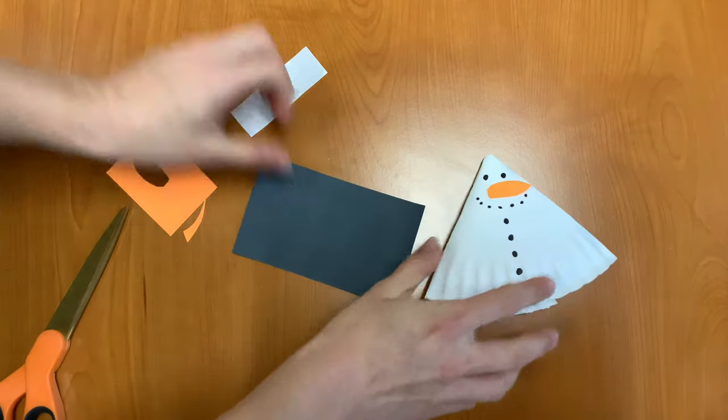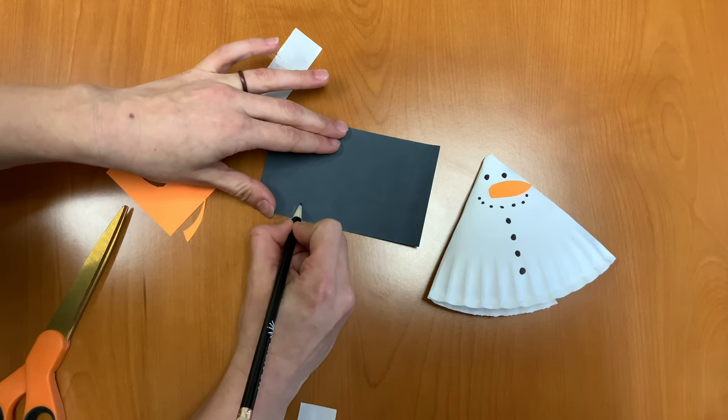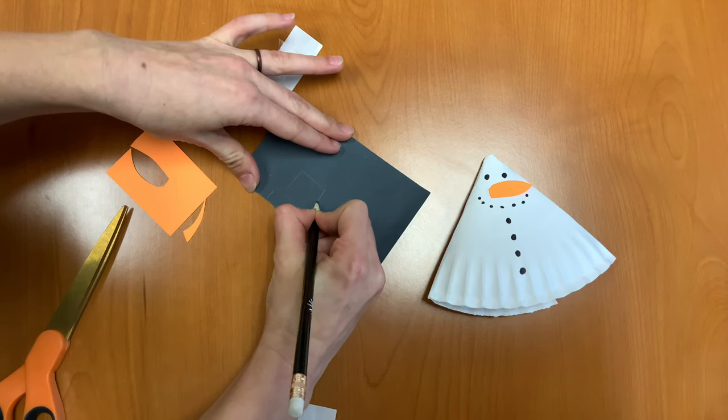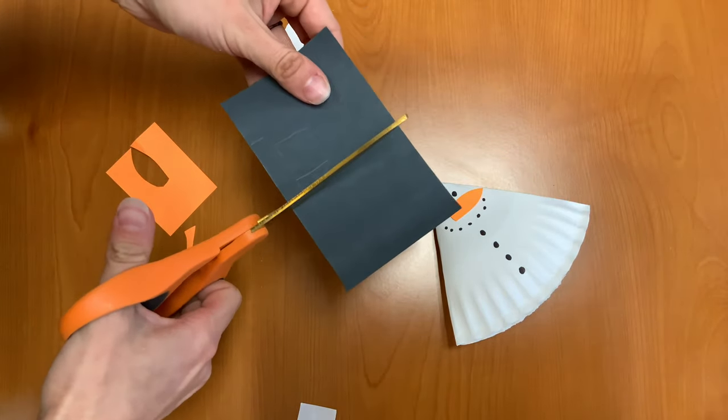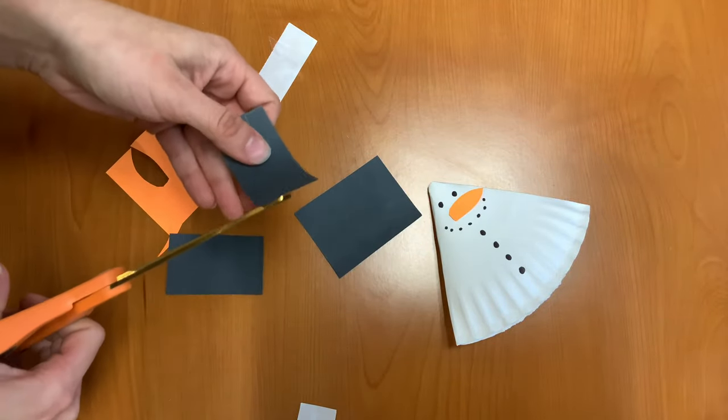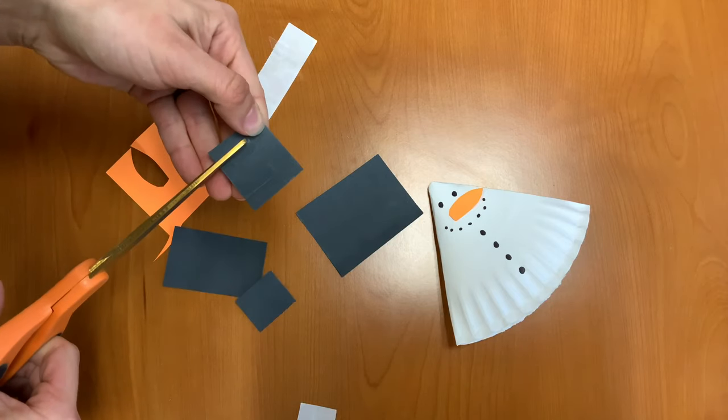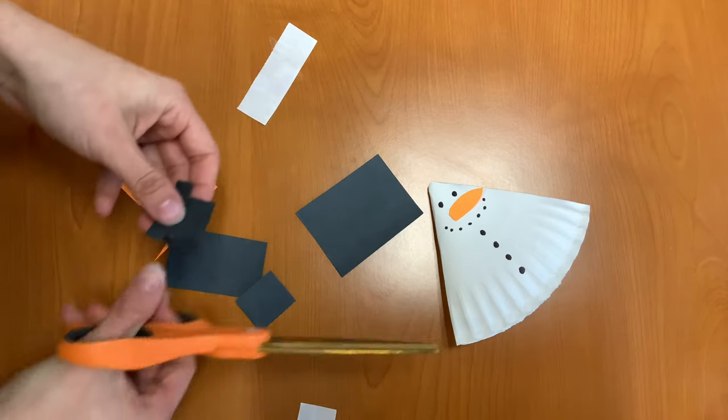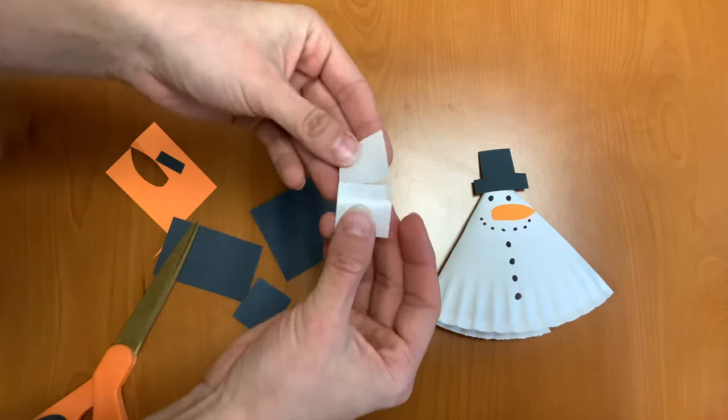Next, we're going to take our black piece of paper and we're going to draw a little top hat on it. And this will be the top hat for our snowman. We'll cut that out. There we go. Now we have a little hat for him, and we're going to attach that with another glue dot.